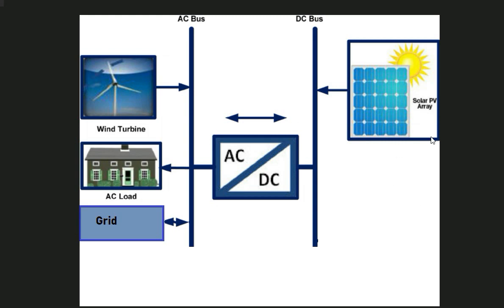This is our hybrid renewable energy system that we want to optimize. It consists of a wind turbine, a solar plant connected to the grid, and a load connected here. We have to optimize the size of this wind turbine and the size of this solar plant connected to the grid, and we have to meet the load demand. At the end, we have to optimize the levelized cost of energy (LCOE) that is being supplied to this load or generated by this renewable energy system.